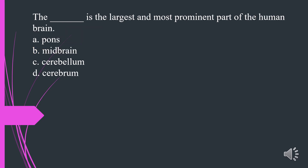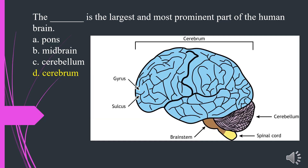What is the largest and most prominent part of the human brain? A. Pons. B. Midbrain. C. Cerebellum. D. Cerebrum. The answer is D. Cerebrum.